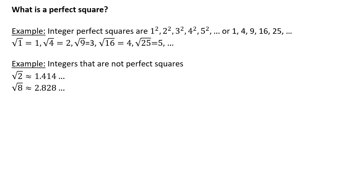If we think about integers that are not perfect squares, the square root of 2 is approximately 1.414. It goes on for a long time — 1.4142135, etc. It keeps going. It's not an integer, it's not a beautiful finished number — not a perfect square.